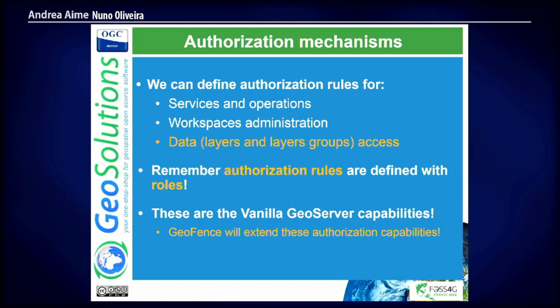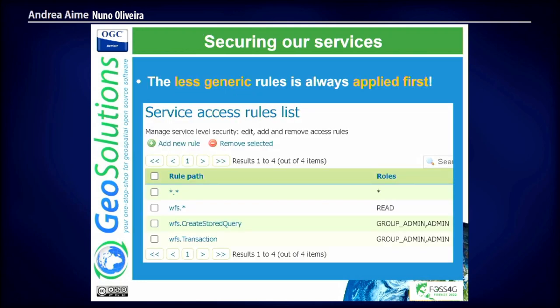Here we can see a couple of service access rules defined for GeoServer. In the first rule, everyone can do everything with the services. Only users with a specific role can read WFS, and only the administrator can do a WFS transaction and create query — which makes sense, because when someone can edit your data, you need a very strong rule in place. The last generic rule will always apply, but a WFS transaction rule for the admin group, since it is very specific — for a service and operation — will prevail against all others. More specific the rule, more priority it has.